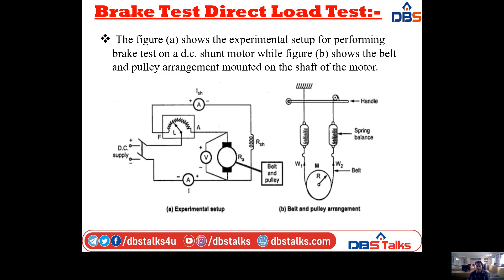There is a diagram with two arrangements: Figure A shows the experimental setup to conduct the brake test on a DC shunt motor, and Figure B shows the belt and pulley arrangement mounted on the shaft of the motor. In Figure B we have a handle, spring balance, belt, and weight W1 connected to earth.